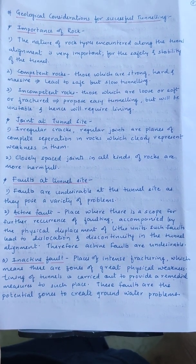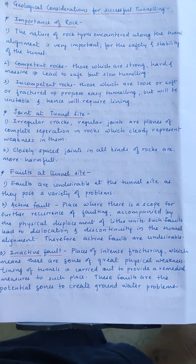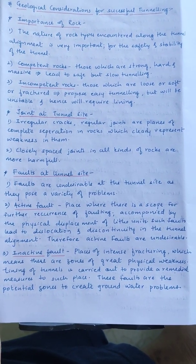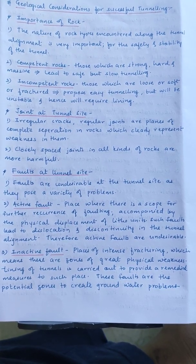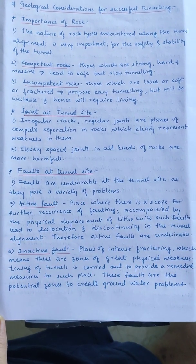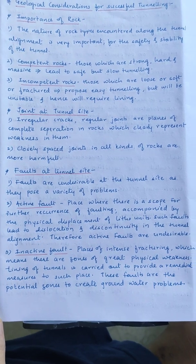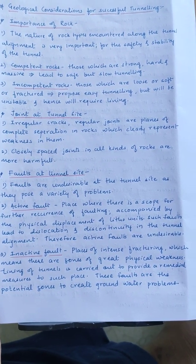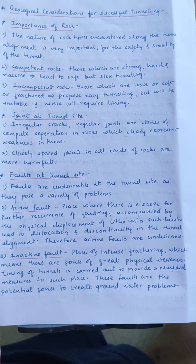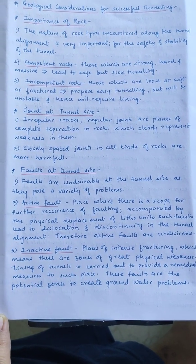Competent rocks lead to safe but slow tunneling. Incompetent rocks are those which are loose, soft, or fractured. These allow easier tunneling but will be unstable and hence require lining. Lining is the covering of the rock surface inside the tunnel with either steel or concrete structures. The next consideration is joints at the tunnel site. Joints are planes of complete separation in rocks that represent weakness. Whenever cracks or joints are present in rock, the material is already deformed and has lost its original strength and stability.